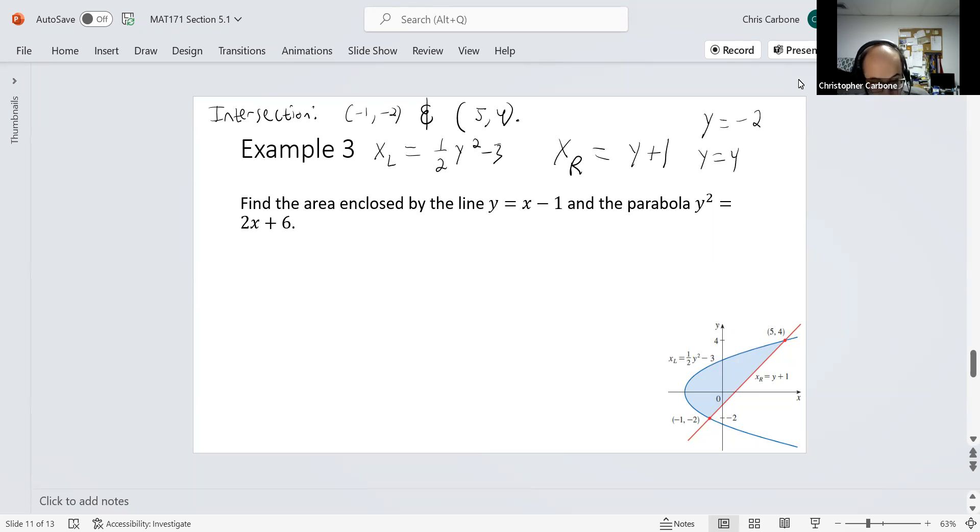Putting that all together, our area would be, if we use the x values for this, we would get something that we would need multiple areas for, since as we can see it does indeed go below the x-axis. We would need two integrations involving this. But if we chose the y values, it makes it a lot nicer. This would be A equals the integral from negative 2 to 4 of the right region minus the left region dy.